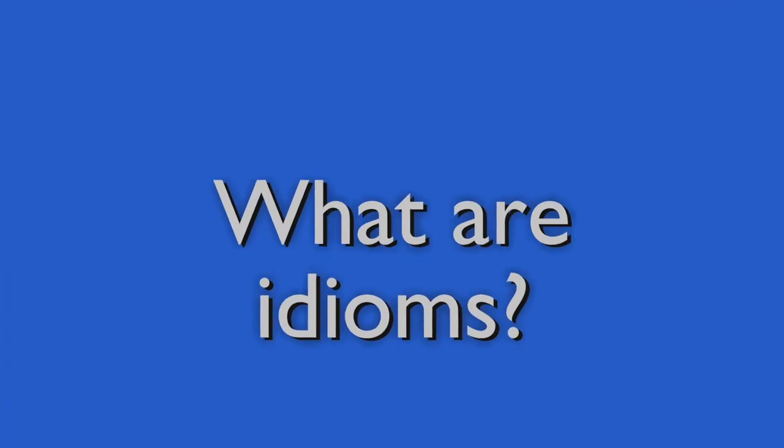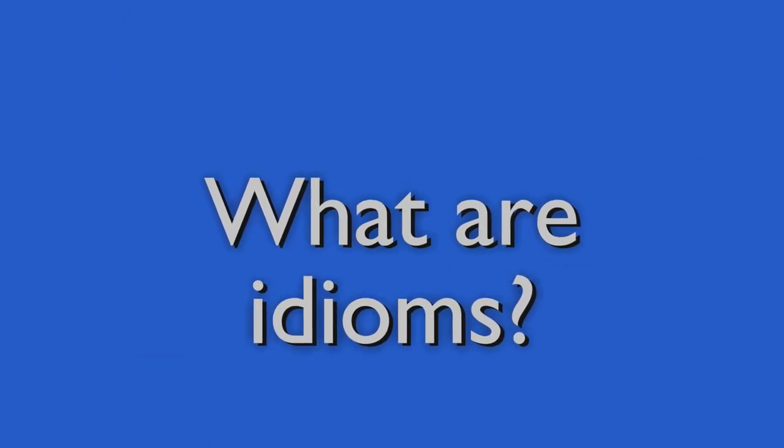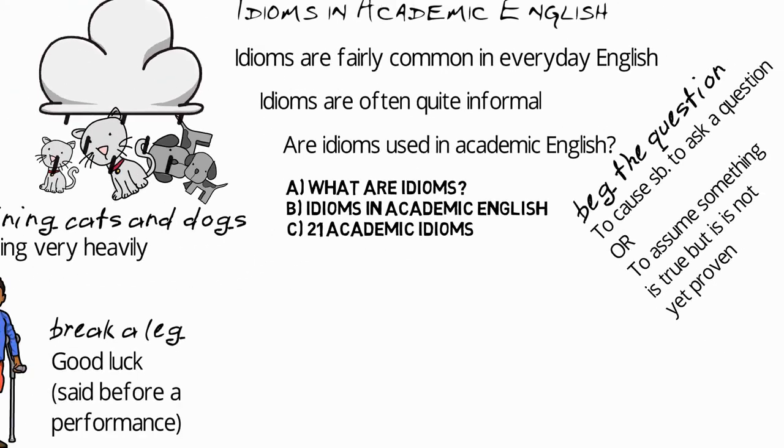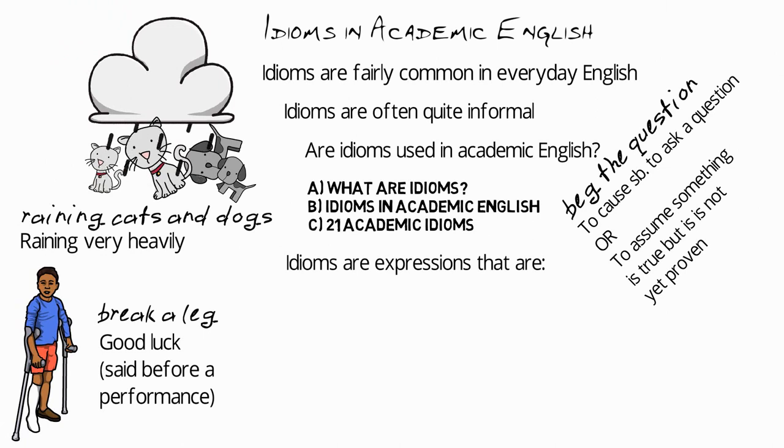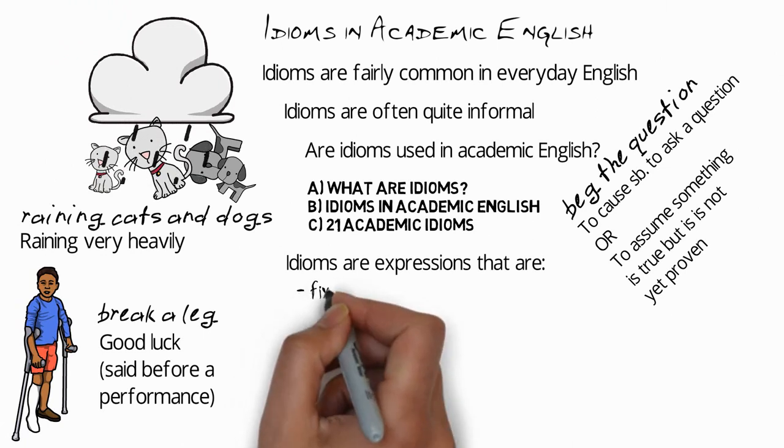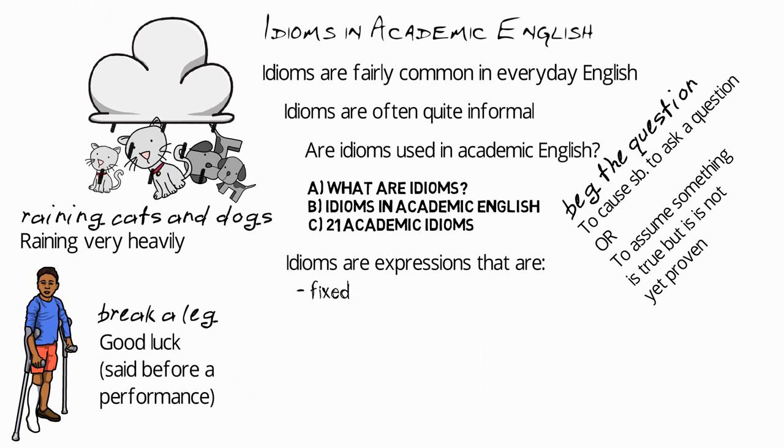So first, what are idioms? Idioms are expressions which are fixed. For example, we can say raining cats and dogs, but we can't say cats and dogs are falling from the sky. It doesn't have the same meaning. We can say break a leg, but we can't say I hope your leg breaks.